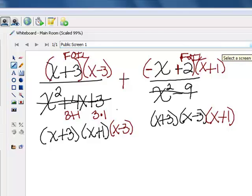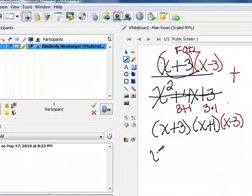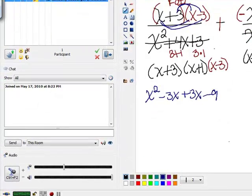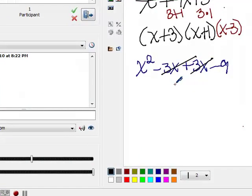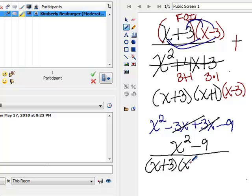Now we've built the denominators up to be the same, so we need to add. But before we can add, order of operations tells us to multiply. So we need to foil both the numerators in order to figure out what the numerators should be once they're multiplied out. So x times x is x squared. x times negative three is negative three x. Three times x is positive three x. And three times negative three is negative nine. Now these three x's cancel, and the numerator of this first fraction is x squared minus nine. And the denominator is all three factors of x plus three times x plus one times x minus three.